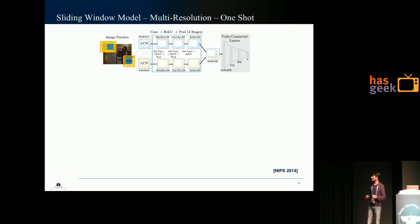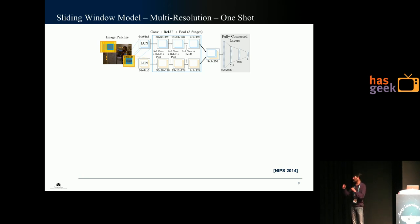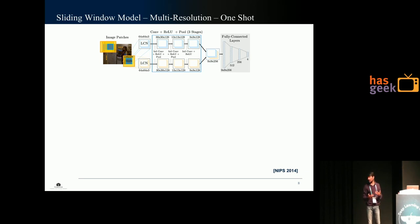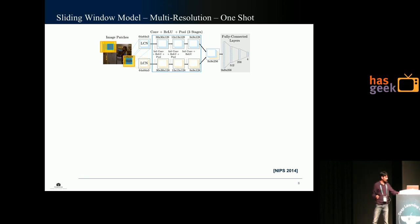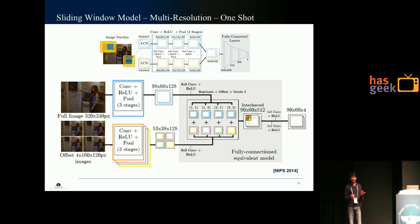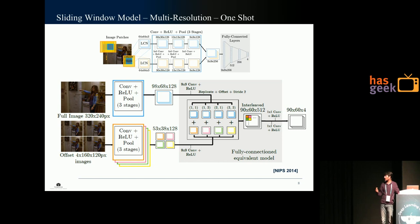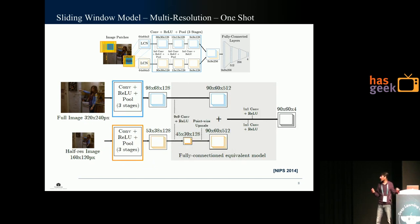We then used multi-resolution patches. Instead of taking just a 64x64 patch, we also take a larger 128x128 patch around it and decimate it — a Gaussian followed by a decimation, which is an approximation of the Laplacian pyramid. The smaller patch has the high-frequency information and the larger corresponds to the low-frequency information. We then applied the one-shot architecture to this multi-resolution setup, though it required an approximation: instead of interleaving, we used one of them and replicated it four times.